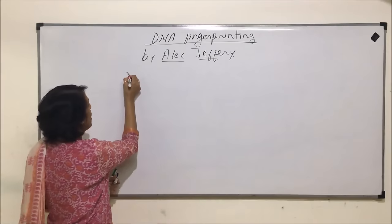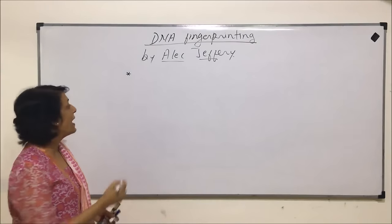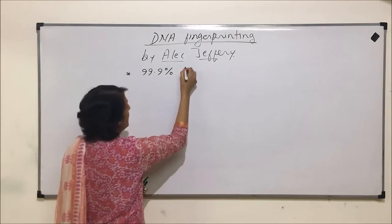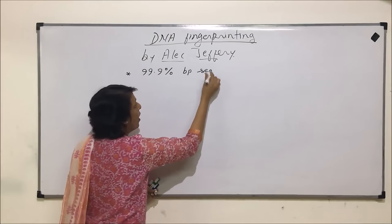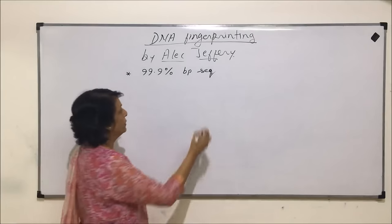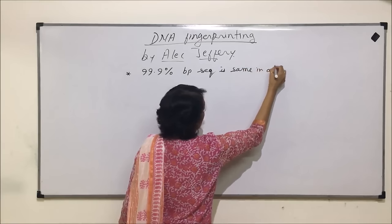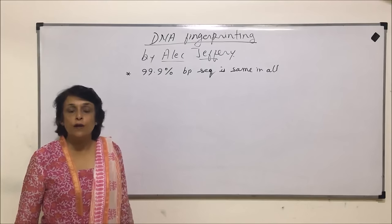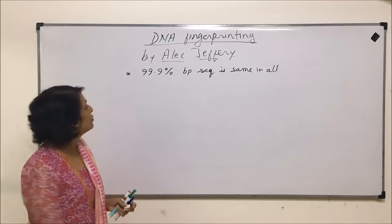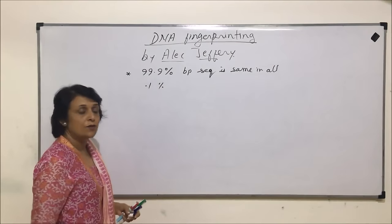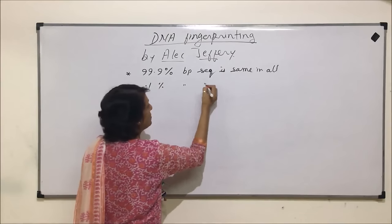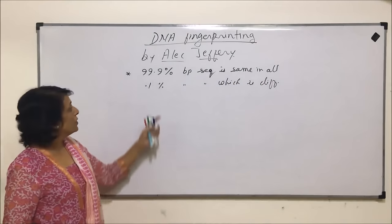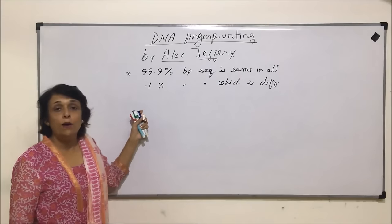From the human genome project, we know that 99.9% of the base pair sequence is common or same in all individuals. That means the DNA or genetic material which is responsible for giving unique identification to an individual is only 0.1% — it is only 0.1% base pair sequence which is different in different individuals.